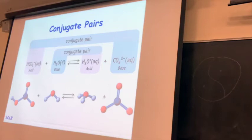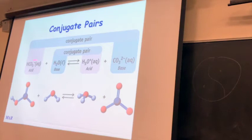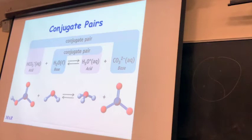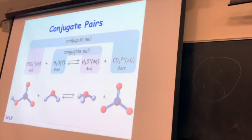Here's another acid-base reaction example. Hydrogen carbonate (sometimes called bicarbonate) reacts with water to make hydronium and the carbonate ion. The conjugate pairs: take away an H+ from hydrogen carbonate and you make carbonate; add an H+ to carbonate and you get hydrogen carbonate. Similarly, add an H+ to water and it makes hydronium; take away an H+ from hydronium and you get a base. Acids have more hydrogens than bases, so if you're not sure which is the acid, the one with more H's is the acid.